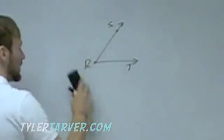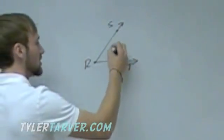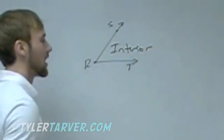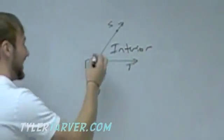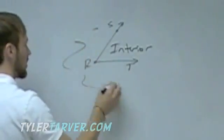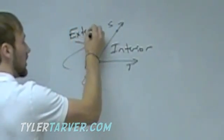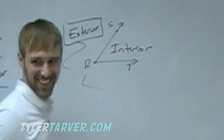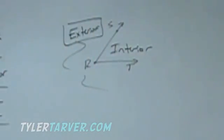Some of the basic things you need to know about an angle: inside the angle it's called the interior. And outside — everything outside of it — it's called the exterior.